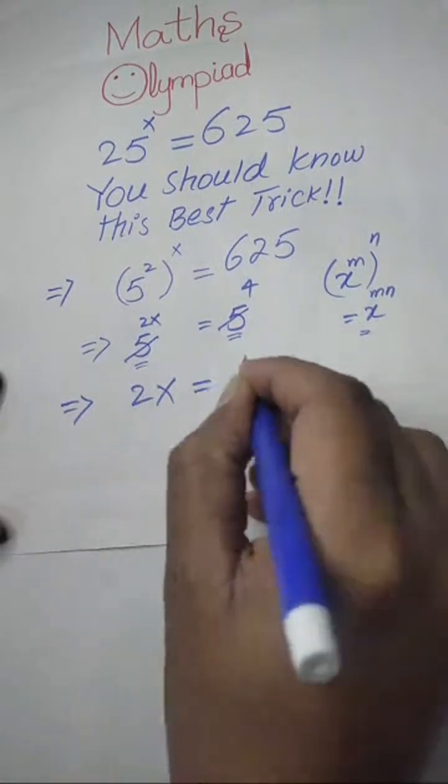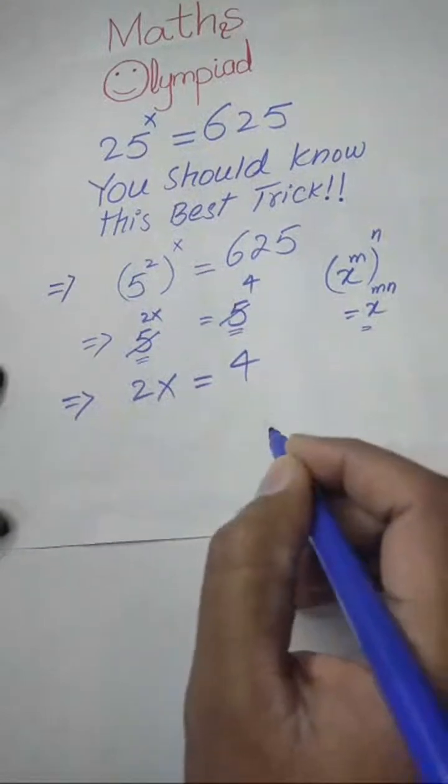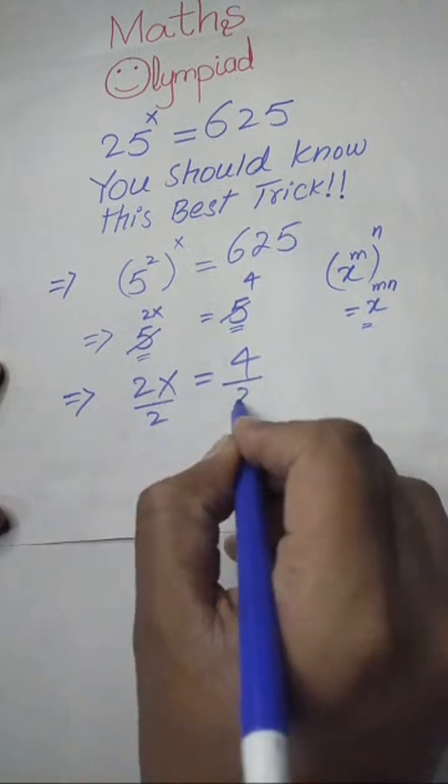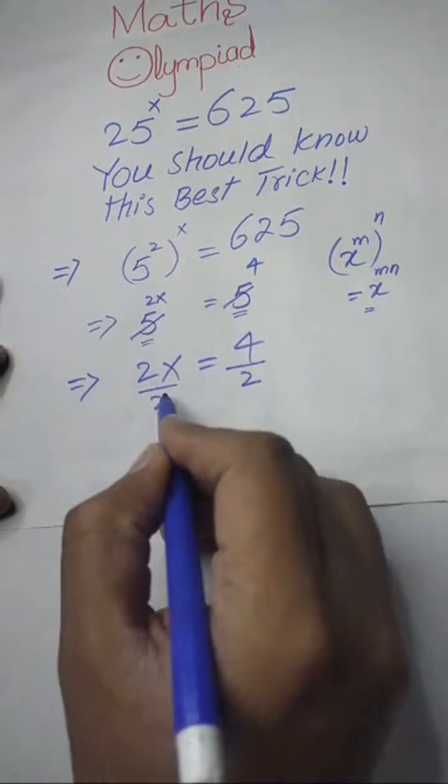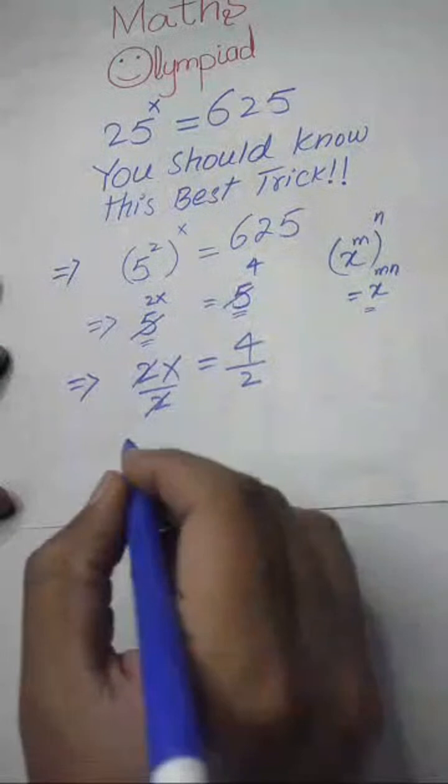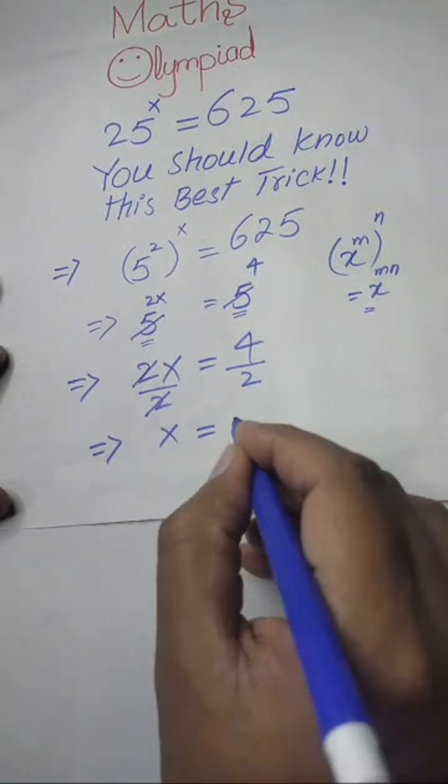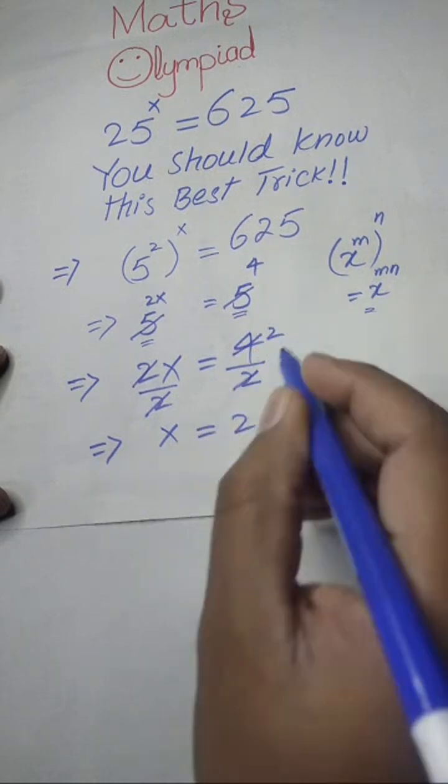Here we will divide both sides by 2 in order to find the value of x. So this 2 cancels out, and the value of x becomes 2, since 4 divided by 2 equals 2. Our final value of x is 2.